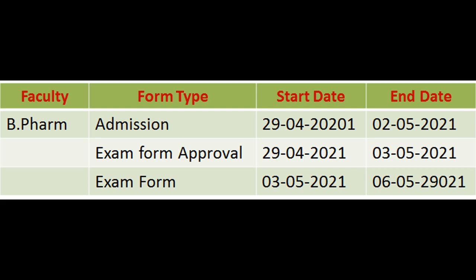This is the schedule of all exam form filling activities. You have to do step number one — admission form filling — between 29th April to 2nd May 2021. You have to approve these admission forms from the institute login between 29th April to 3rd May 2021. Then the exam form link will be activated in the student section after university approval, and students can do the payment between 3rd May to 6th May 2021.